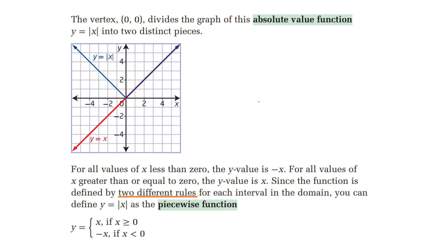Now we talk about the absolute value function. We start with the easiest one: y equal to absolute value of x. To draw this graph, we first draw the line y equal to x. Then anything negative, we reflect it — for example, the value negative 3 becomes positive 3. So any negative value, we just flip it up. The new graph y equal to absolute value of x will look like this.